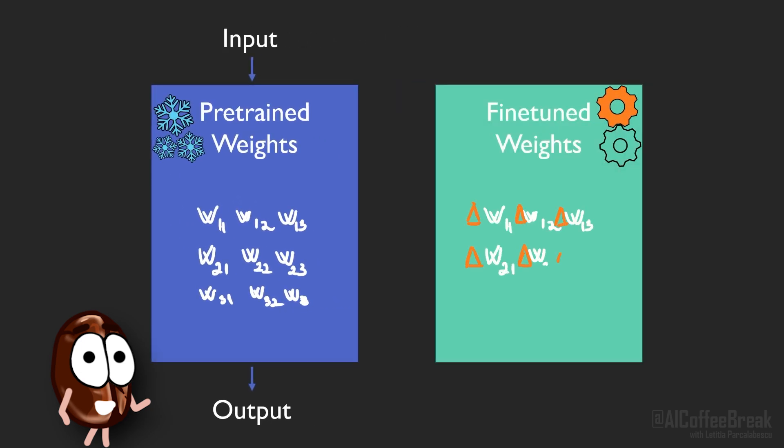Instead, we add a separate set of weights. These fine-tuned weights, after an ideal LoRa training process represent the differences, we need to add to the pre-trained parameters to make the model perfect for solving the fine-tuning task.